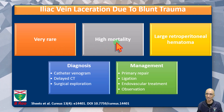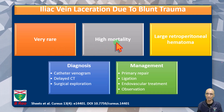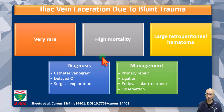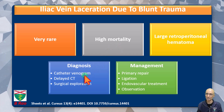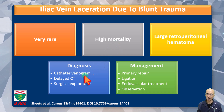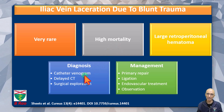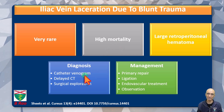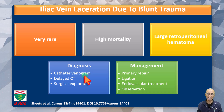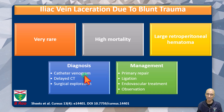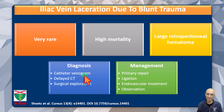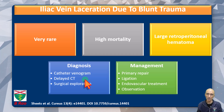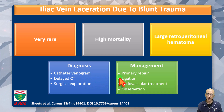As a high mortality condition, patients present with large retroperitoneal hematoma as we saw in our case. Diagnosis can be made based on catheter venogram, delayed CT venous images as obtained in our patient, or during surgery.